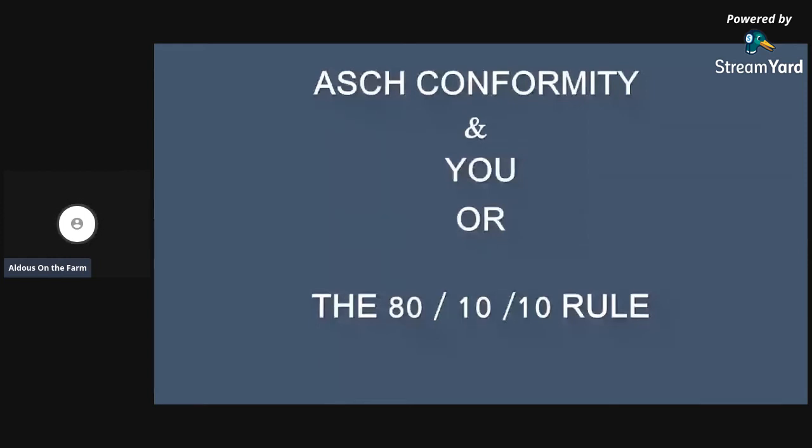They would say 'which of these three lines matches this line?' and then they would show just line B, and everybody would answer individually. It wasn't until actors were placed within the groups, and those actors would say 'well obviously it's line C,' that you would have people actually change their opinions. Some people would fight, and that's where the 80/10/10 rule comes into effect.